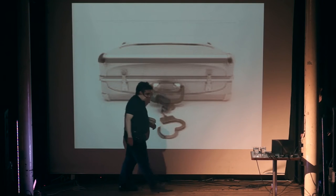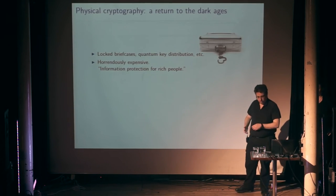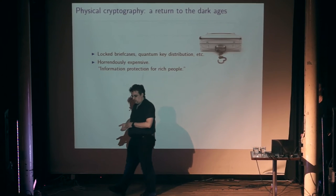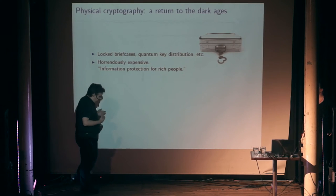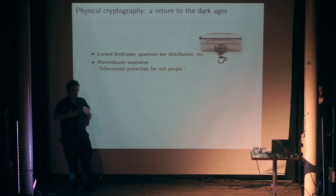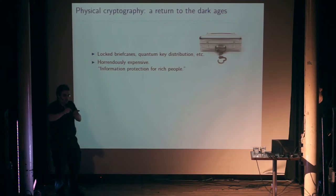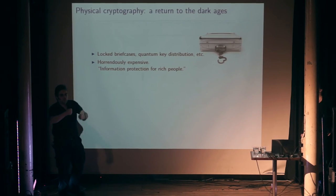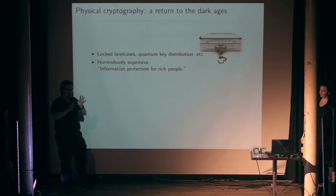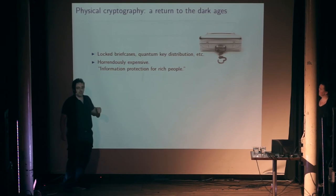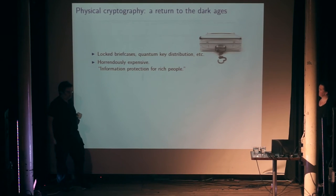One answer is to go back to the Dark Ages — the Dark Ages used what you might call physical cryptography. Examples include locked briefcase cryptography and quantum key distribution. These are things where you can communicate secrets and not just keep them confidential but also protect the integrity. For example, take three copies of the document and send them through three trusted couriers with locked briefcases chained to their wrists. Even if somebody corrupts one courier, they'll be able to see the message but they won't be able to change it because you get the other two copies. You can do these super expensive physical techniques to protect your information.